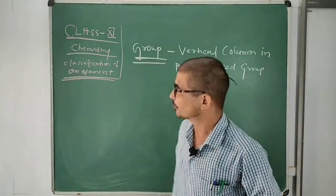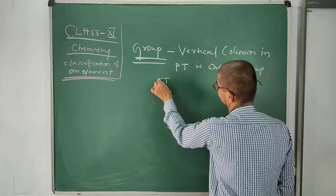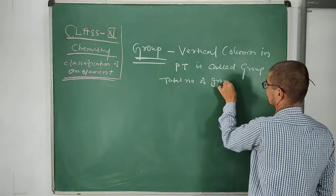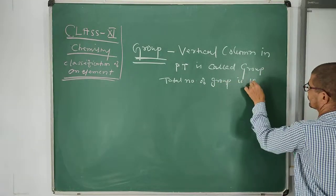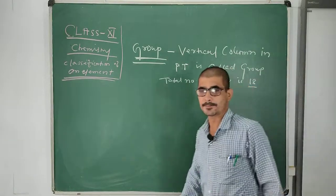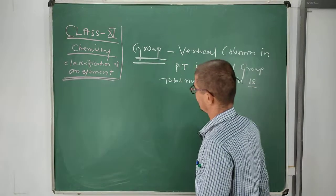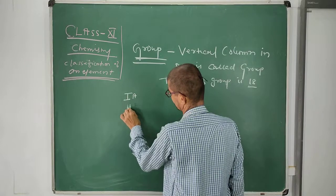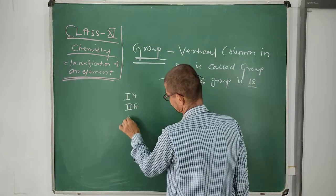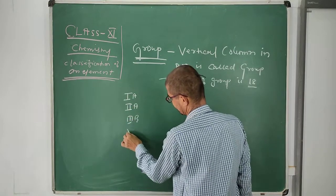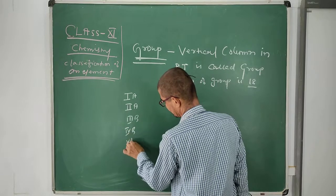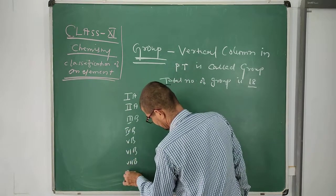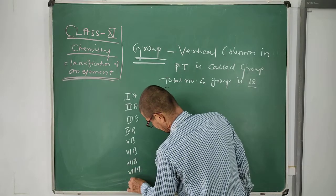The total number of groups is 18. These groups are named: first A, second A, third B, fourth B, fifth B, sixth B, seventh B, and eighth B.